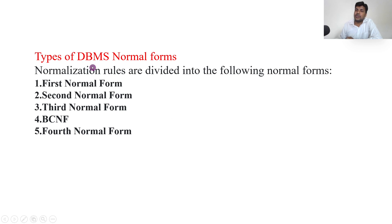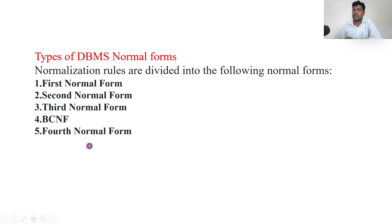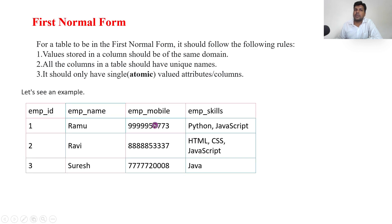Now let us see what the types of DBMS normal forms are. There are six normal forms. Let us go through them one by one, starting with the first normal form.